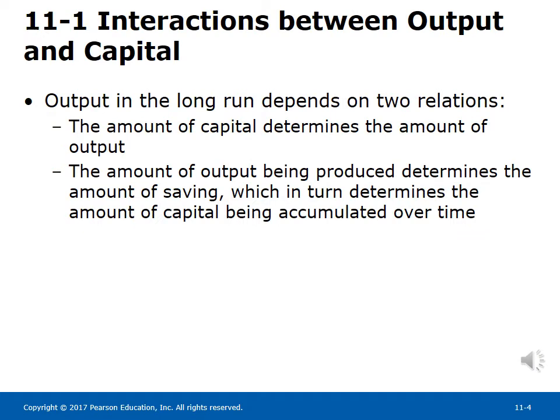Section 11-1: Interactions between Output and Capital. Output in the long run depends on two relations. The amount of capital determines the amount of output. The amount of output being produced determines the amount of saving, which in turn determines the amount of capital being accumulated over time.